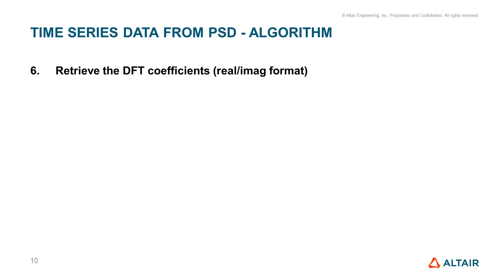Now that we have both amplitude and the phase, we just need to retrieve the discrete Fourier transform coefficients in the real and imaginary format. To do that, we unfold the single-sided and normalized spectrum.